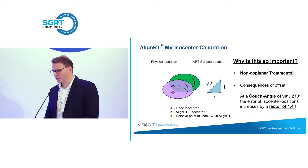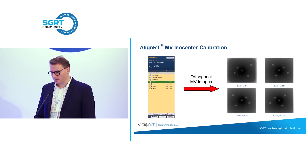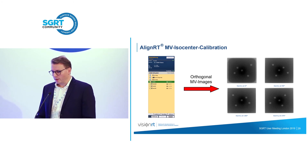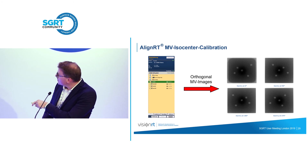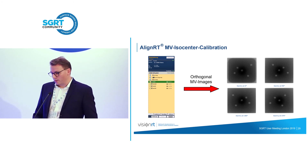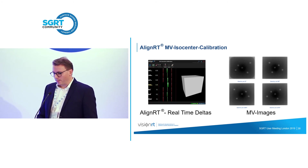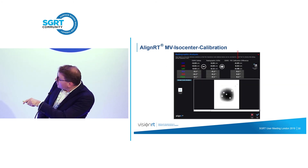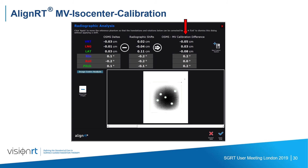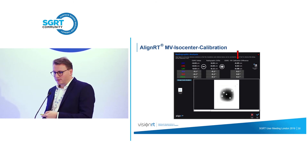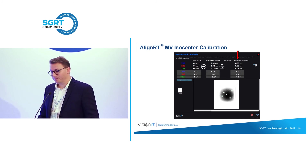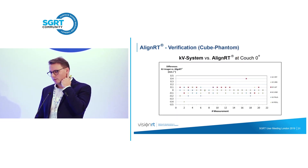For the calibration, we take a set of orthogonal MV images — calibrating always onto the actual treatment beam, not the KV source. You see the spheres at different positions due to different gantry angles. The software compares these to the real-time deltas calculated from the cube surface. You get a screen showing AlignRT deltas, radiographic shifts from imaging, and the calibration difference — which is initially not zero. After calibrating and repeating the procedure, this difference is by definition zero. But we asked ourselves: how can we verify the system really works?